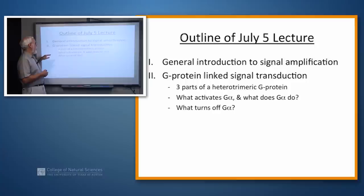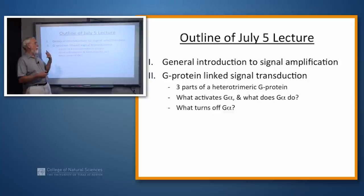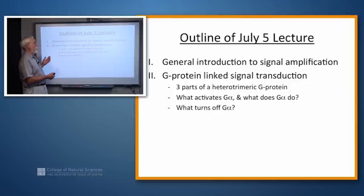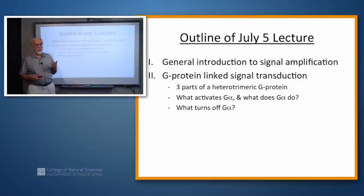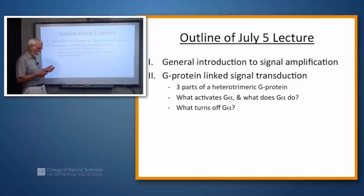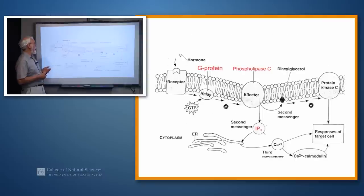The G protein that binds to the G protein-linked receptor is heterotrimeric — it has three parts called alpha, beta, and gamma. We'll talk about what activates G alpha, what G alpha does when activated, and then how you turn it off, because in signal transduction whatever you turn on you've got to turn off, otherwise you have chaos.